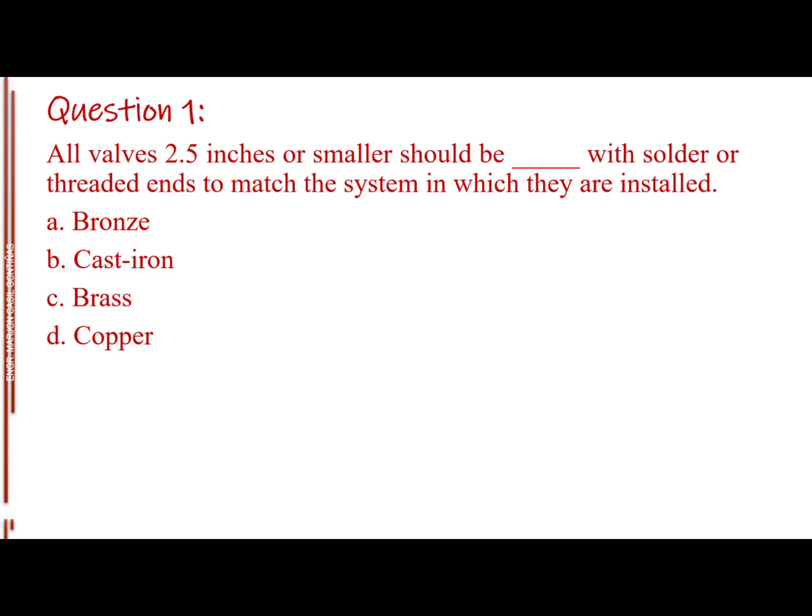Question number 1. All valves 2.5 inches or smaller should be blank with solder or threaded ends to match the system in which they are installed. Letter A, bronze. Letter B, cast iron. Letter C, brass. Letter D, copper. The answer is letter A, bronze.